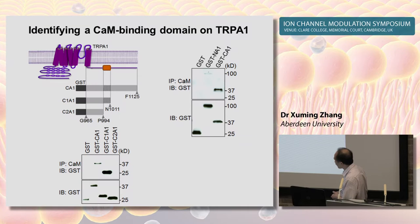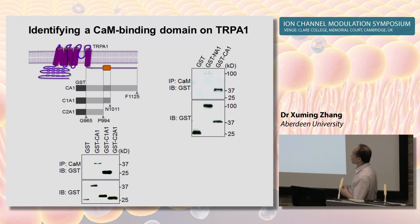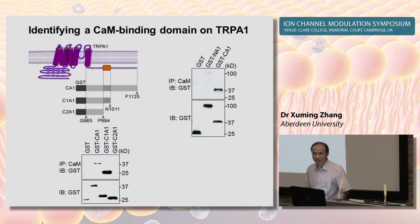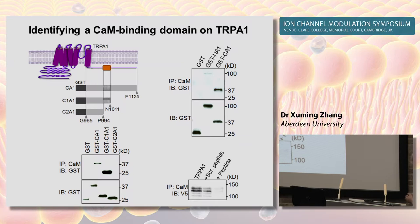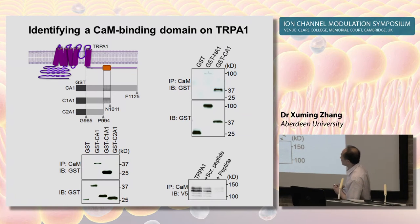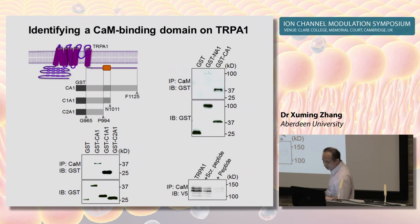All other deletions had no effect. To further validate that this 16-amino-acid region is the real calmodulin-binding region, we synthesized a peptide with a sequence identical to this region and used it in a similar pull-down assay. Incorporating this peptide abolished the binding of calmodulin to TRPA1, while a scrambled peptide had no effect. Together, this experiment identifies this 16-amino-acid region in the C-terminal of TRPA1 as the calmodulin-binding region.